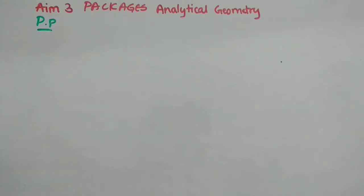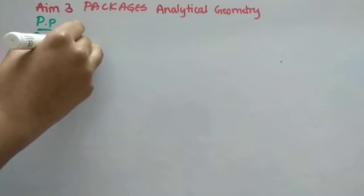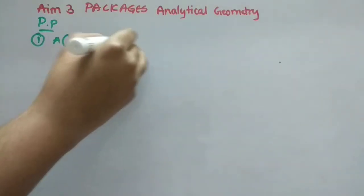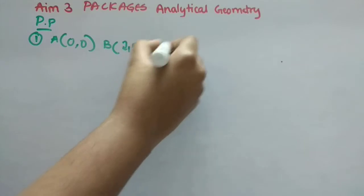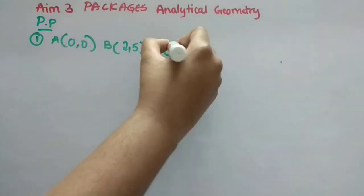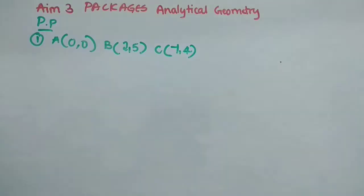First question is, they have given us 3 points: A is (0,0), B is (2,5), and C is (7,4). So what we have to do? We have to find Centroid G.